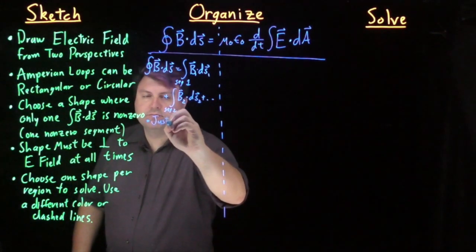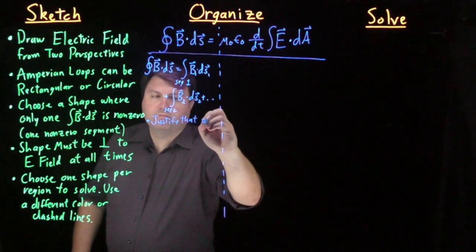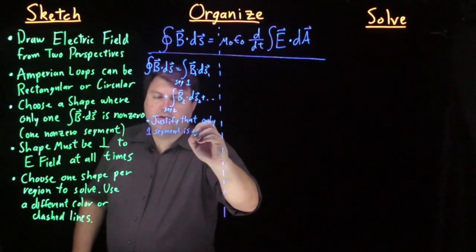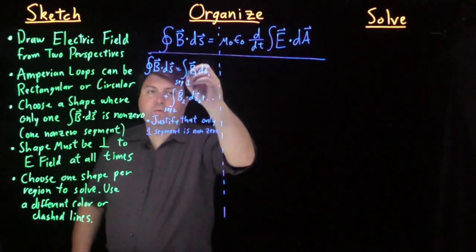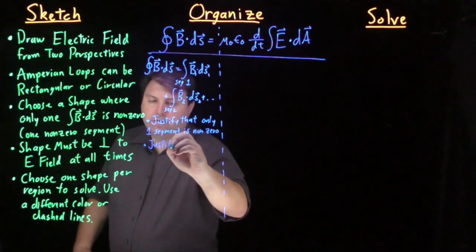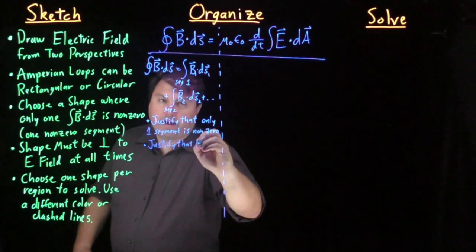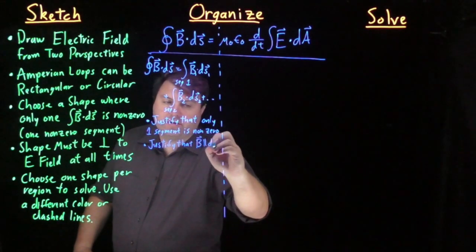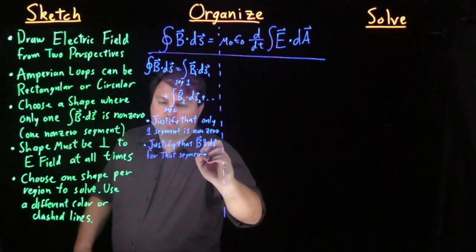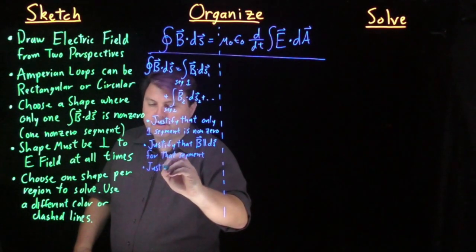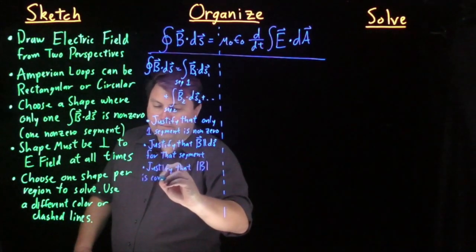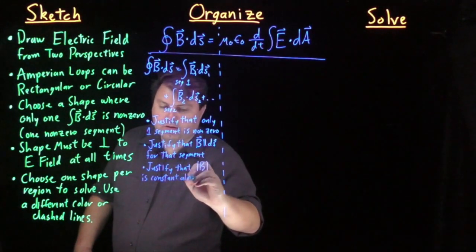And we want to justify that only one segment is non-zero. So only one of these terms will be non-zero. We need to justify that our magnetic field B is parallel to ds for that segment. And we need to justify the magnitude of B is constant along the segment.